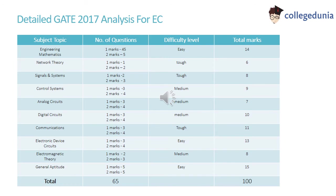Let's discuss the detailed analysis of EC 2017. Questions from Engineering Mathematics, Electronic Device Circuits and General Aptitude were easy, whereas questions from Network Theory, Signals and Systems and Communications were tough. The rest of the paper was moderate.